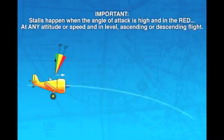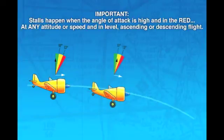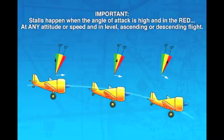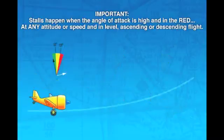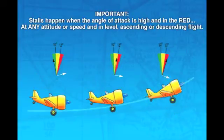Stalls occur when the angle of attack is high, which is depicted as red on Alpha Trainer 3D. These stalls can happen at any attitude or speed and in level, ascending, or descending flight.